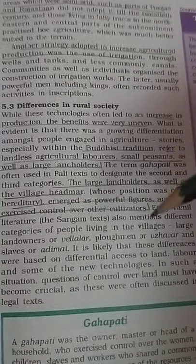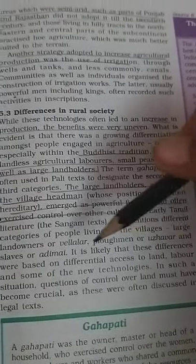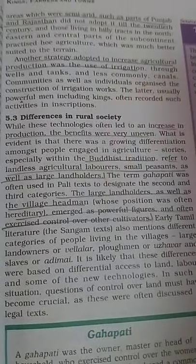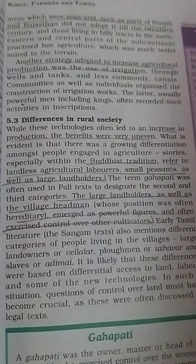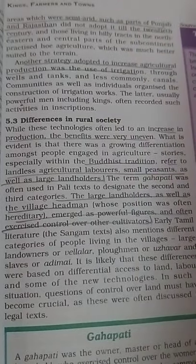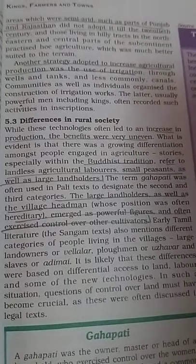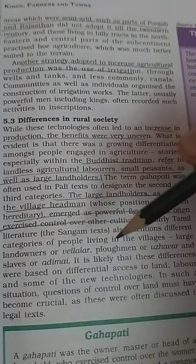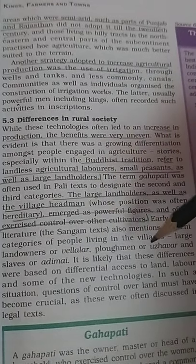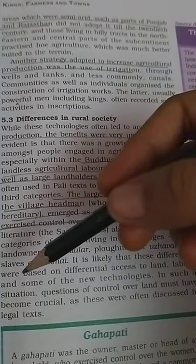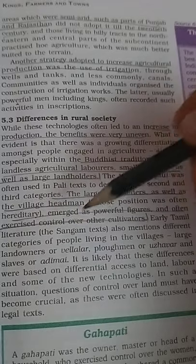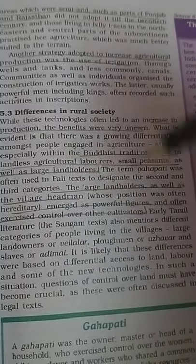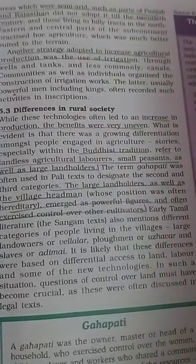Some examples mention differentiation within villages: there were large landowners called Vellala, then ploughmen, and then slaves. So there was a clear distinction between different groups in the village.